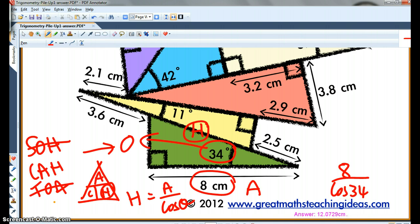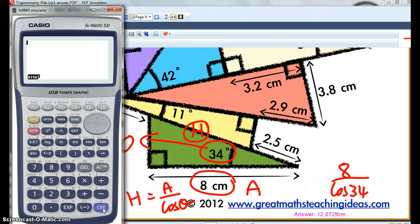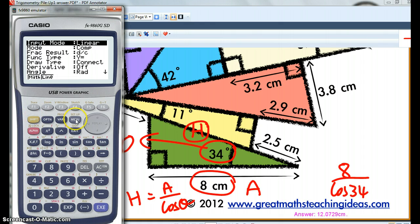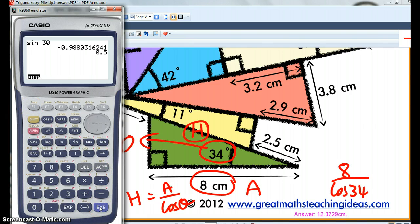So we get our calculator out. We go into run. We go sine of 30. Make sure it's 0.5. Shift, set up. We don't want angles and radians. We want it in degrees. Now it's 0.5.